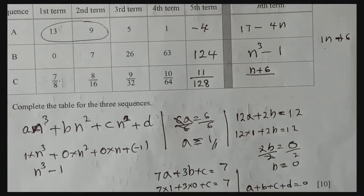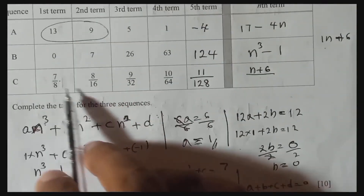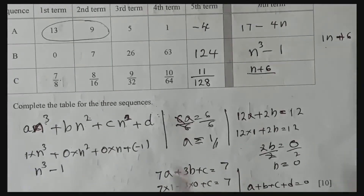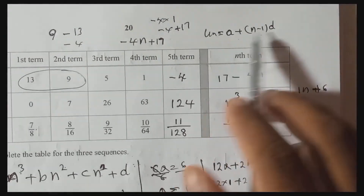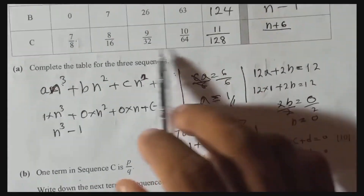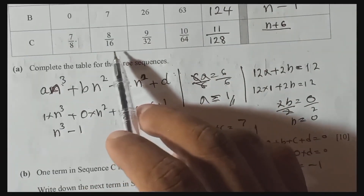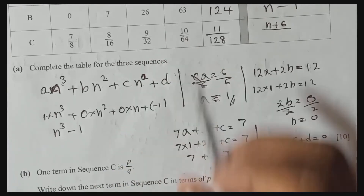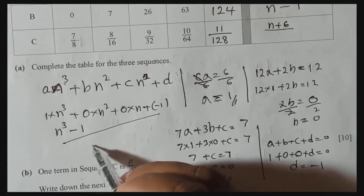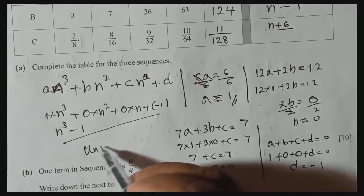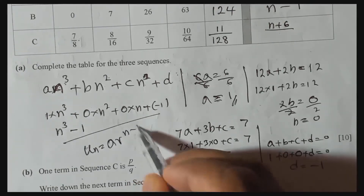For the denominator, I'll use the geometric sequence formula: Un = A·r^(n−1). The first term A is 8, and the common ratio r is 2 — found by dividing a term by the previous: 16 ÷ 8 = 2. So the denominator nth term is 8 × 2^(n−1).